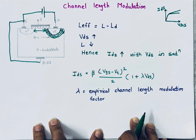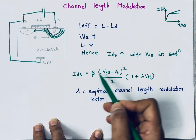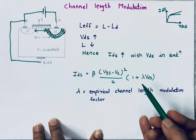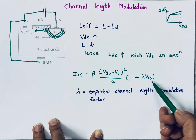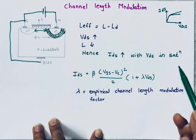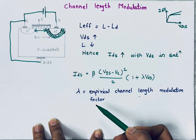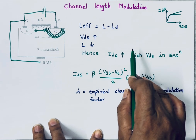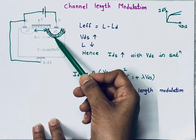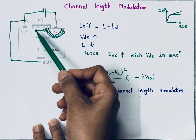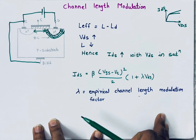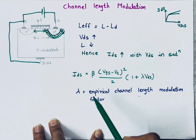The current equation including channel length modulation is: I_DS = β × (VGS − VT)² / 2 × (1 + λ × VDS), where λ (lambda) is the empirical channel length modulation factor — do not confuse this with lambda rules used in layout. In summary, channel length modulation occurs because of the reverse-biased PN junction between the drain terminal and the substrate. The increased depletion region width reduces effective channel length, causing current to increase in the saturation region. That covers the non-ideal IV effects of MOSFETs.